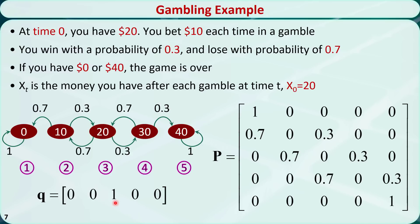This is a Markov chain because the amount of money you have at time t plus 1 only depends on the amount of money at time t. It does not depend on the amount of money you had before time t. Let's see another example.